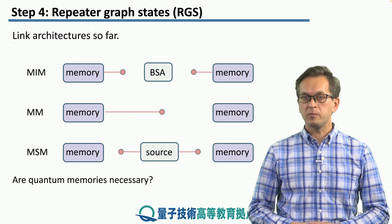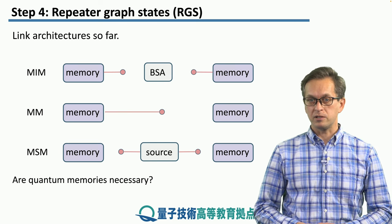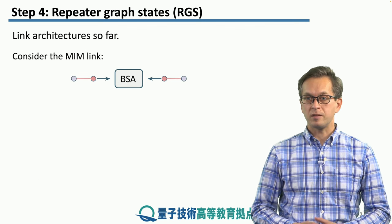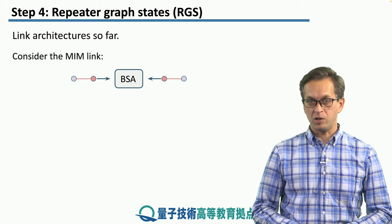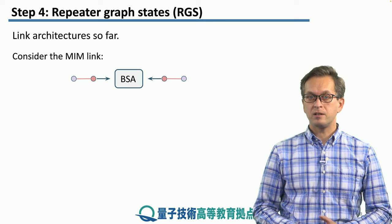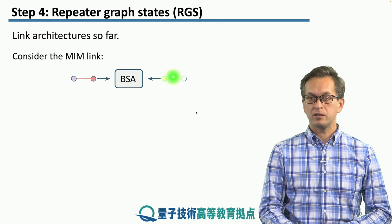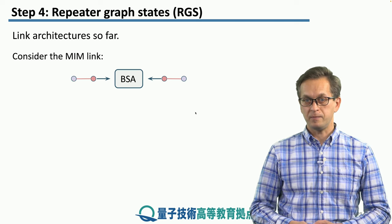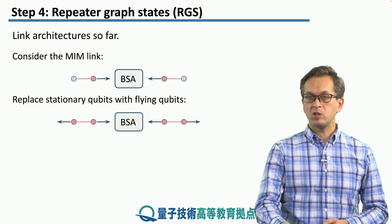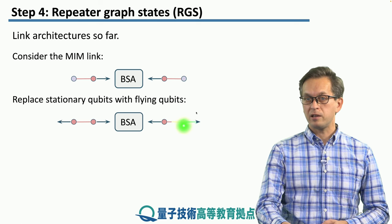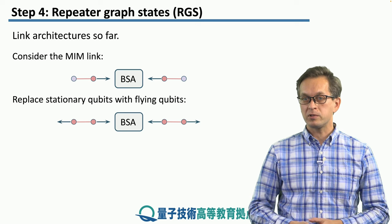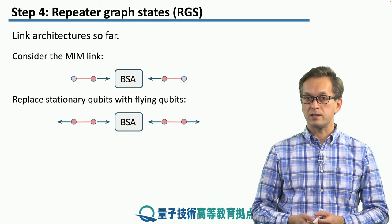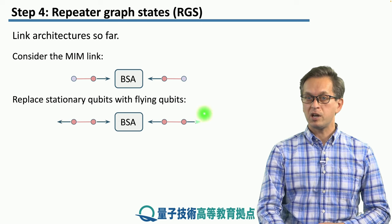So it looks like quantum memories are necessary for link architectures. Is that true? Actually, it turns out no. In this step, we're going to discuss an architecture that doesn't utilize stationary qubits in the form of quantum memories. Consider an MIM link: here we've got a qubit, here we've got another qubit, and they're each entangled with a photon traveling towards the BSA. But there's nothing stopping us from exchanging the stationary qubit into a flying qubit — another photon that could be traveling in the opposite direction. What happens at the BSA is still the same: we try to perform entanglement swapping, and if we succeed, then these outer flying qubits become entangled.